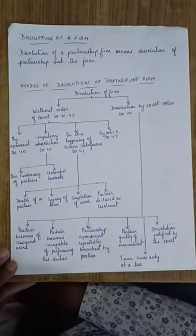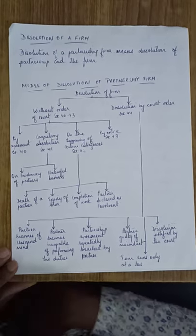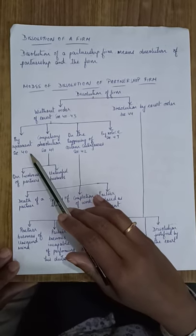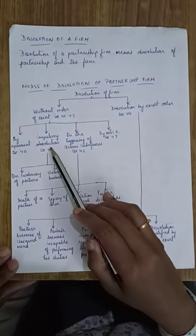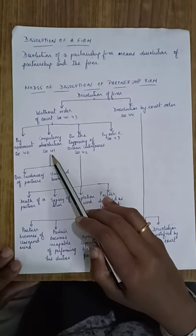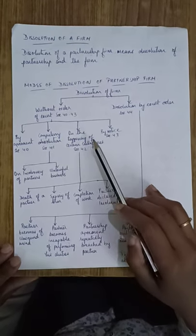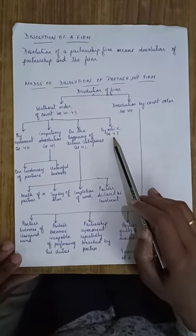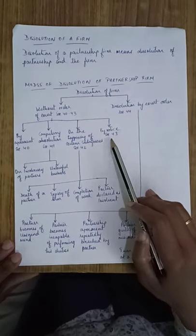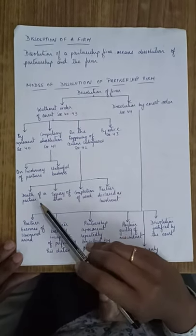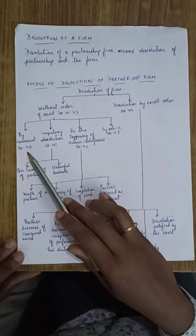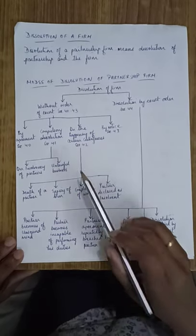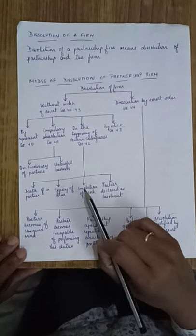Without a court order, there are four modes: when all the partners agree for the dissolution; compulsory dissolution under Section 41; on the happening of a certain contingency under Section 42; and by notice by all the partners or one partner for all under Section 43. When all the partners agree, there is no need for further discussion — the firm is dissolved. But what are the conditions for compulsory dissolution?